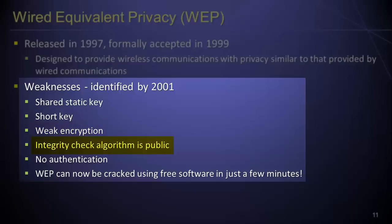Fourth, WEP used an unencrypted integrity check value generated from a well-known algorithm, allowing a malicious party to send modified data frames with appropriate check values that would appear legitimate. Finally, WEP had no formal mechanism for authentication, meaning a malicious party could gain access to the network by obtaining a correct SSID and MAC address. With all of these weaknesses, WEP can now be cracked using free software in just a few minutes.